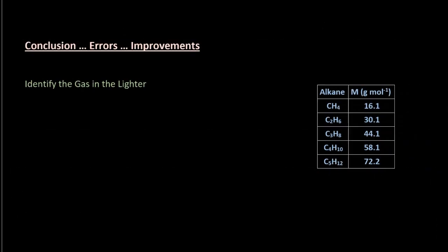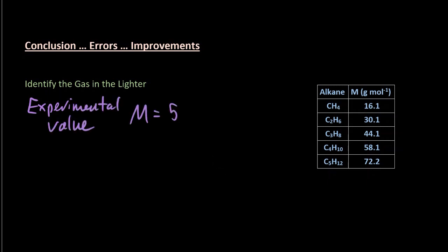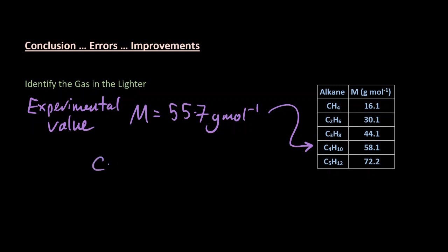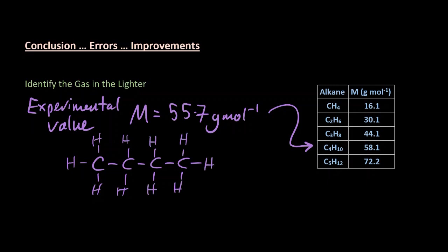My experimental value for molar mass was 55.7 grams per mole, which indeed correlates with C4H10 - butane - and maybe a touch of propane in it. Let me draw out butane, the fourth alkane. Now let's look at my percent error.